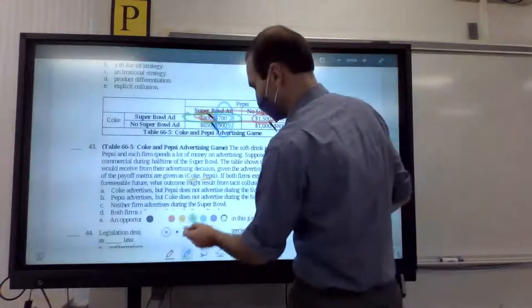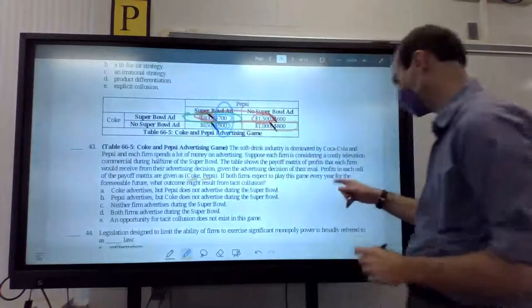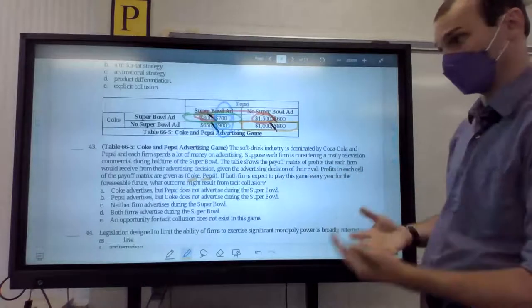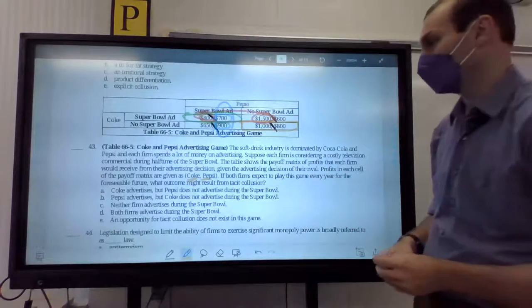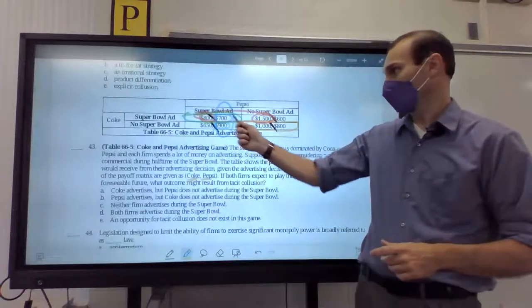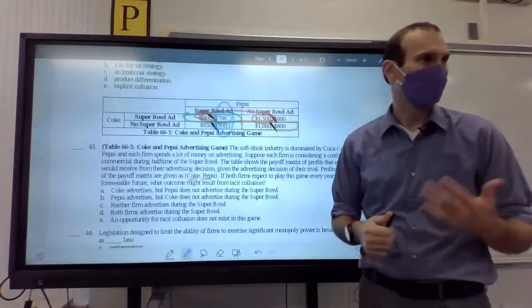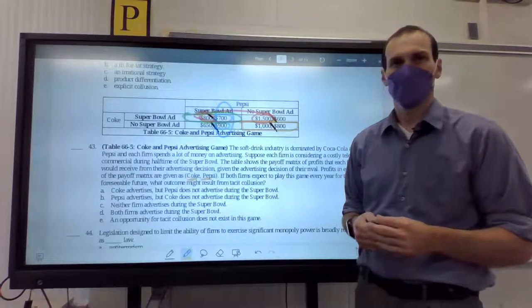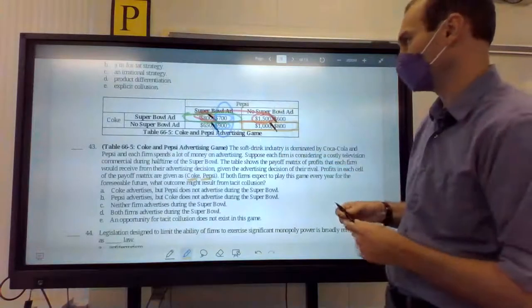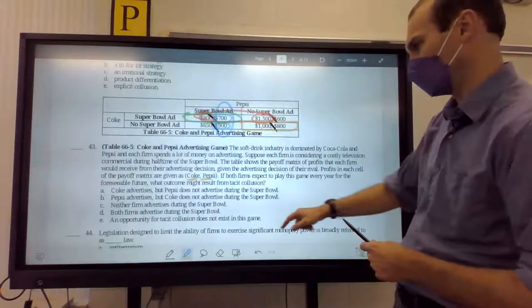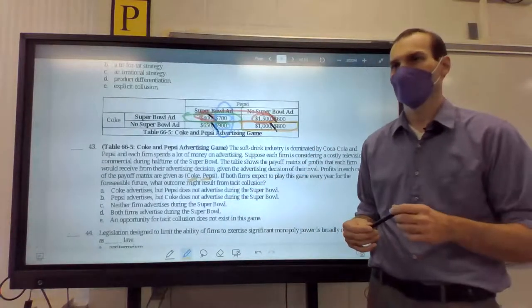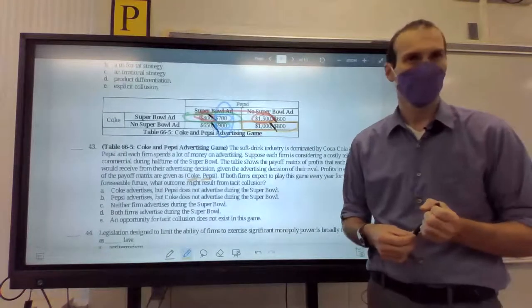However, we also have the profit maximizing one here. So, let's see. In each cell, the payoff matrix shows Coke, Pepsi, if both firms expect to play this game every year for the foreseeable future, what outcome might result from tacit collusion? So, if they're colluding, they can end up where? Away from the Nash equilibrium and go to the profit maximizing outcome or the cooperative equilibrium. Does that make sense to you guys? So, if they collude and they know this is our data, they end up here. So, they will both not advertise. And neither firm advertises. They're in C. C is the answer. So, does profit maximizing mean cooperative? Yes. Okay.